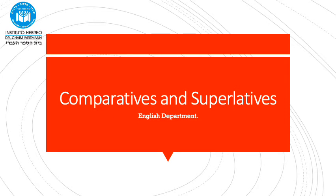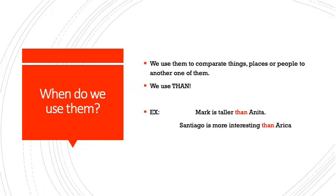Hello students. Today we are going to start talking a little bit more about comparatives and superlatives. First of all, we need to know when we use them. One of the most common uses of comparative sentences is to compare things, places, or people to another one of them. Also, when we make a comparison, we use the word 'than'.